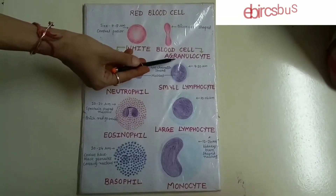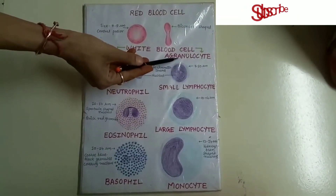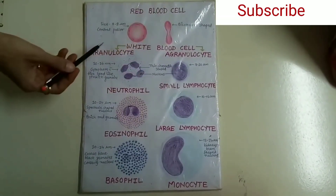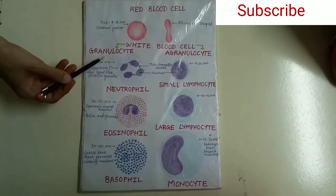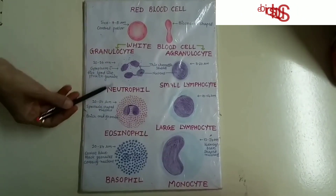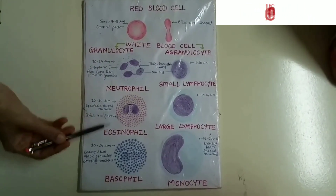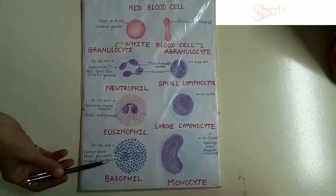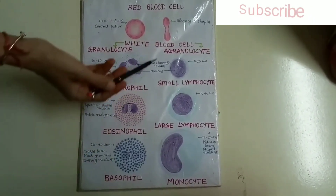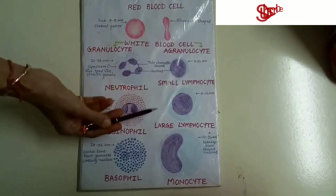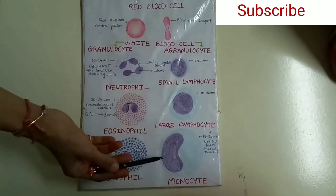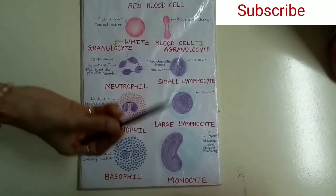When granules are absent, the cells are known as agranulocytes. Granulocytes are further divided into neutrophils, eosinophils, and basophils, while agranulocytes are lymphocytes and monocytes.